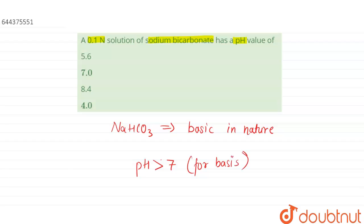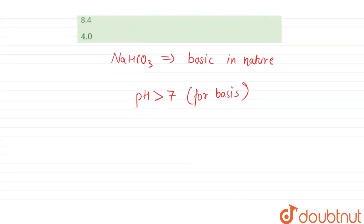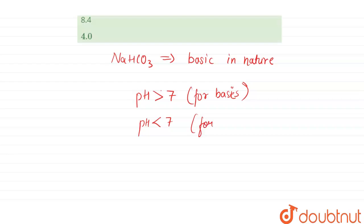We know that the pH scale is from 1 to 14. When pH is more than 7, it is for bases. When pH is less than 7, it is for acids.